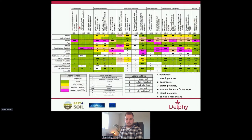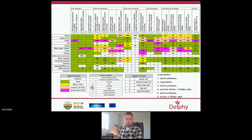Then you click 'create scheme' to display the scheme with the data you selected. In this scheme the selected crops and green manure crops appear on the left side and the selected nematodes appear above. The legend explains the colors and symbols: green means little damage to the crop, purple means a lot of damage. Dots indicate the degree of multiplication — three dots means strong multiplication — and a double dash means an active population decline.